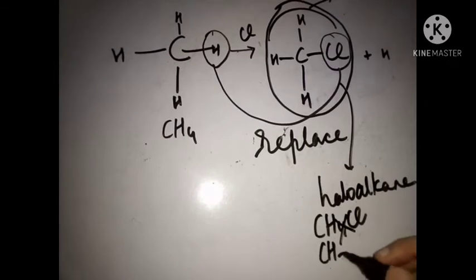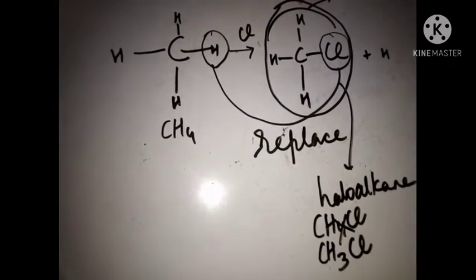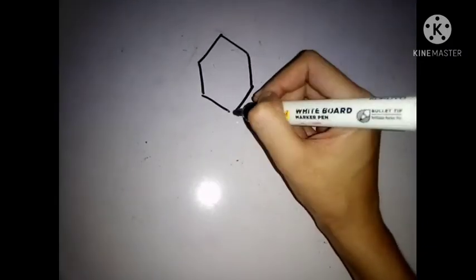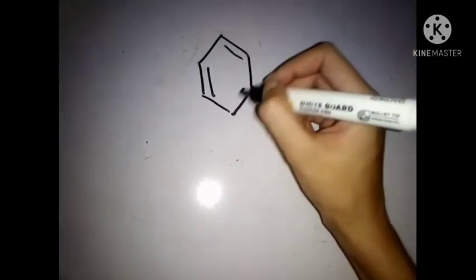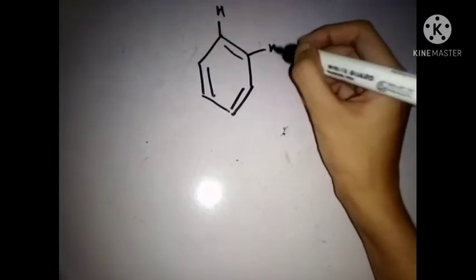It will not be CH4Cl like we have combined methane and chlorine, it will be CH3Cl because one hydrogen is replaced. Now let's see what are haloarenes. Halo is again halogen and arenes are aromatic compounds.